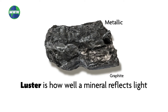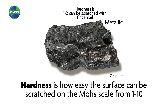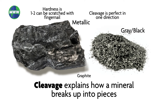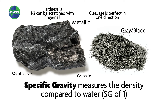Luster is how well a mineral reflects light. Hardness is how easily the surface can be scratched, measured on the Mohs scale from 1 to 10. Streak is the color of the mineral in powdered form. Cleavage explains how a mineral breaks up into pieces. Specific gravity measures the density compared to water, which has a specific gravity of 1.